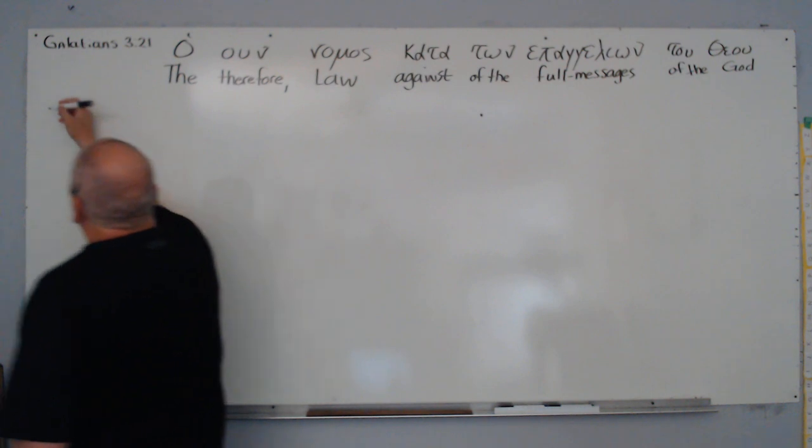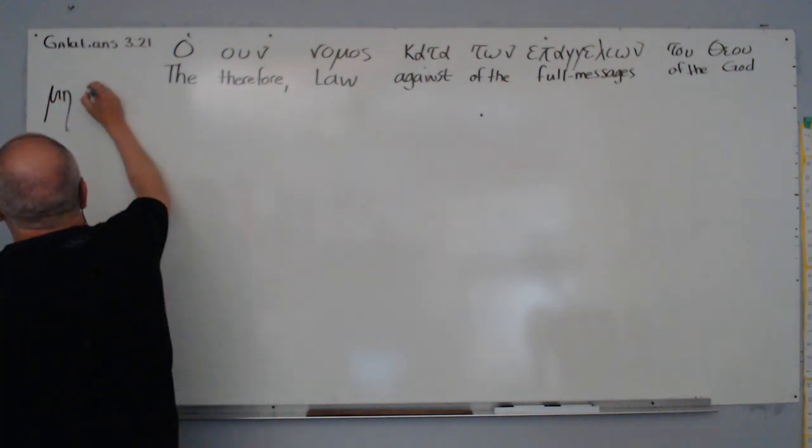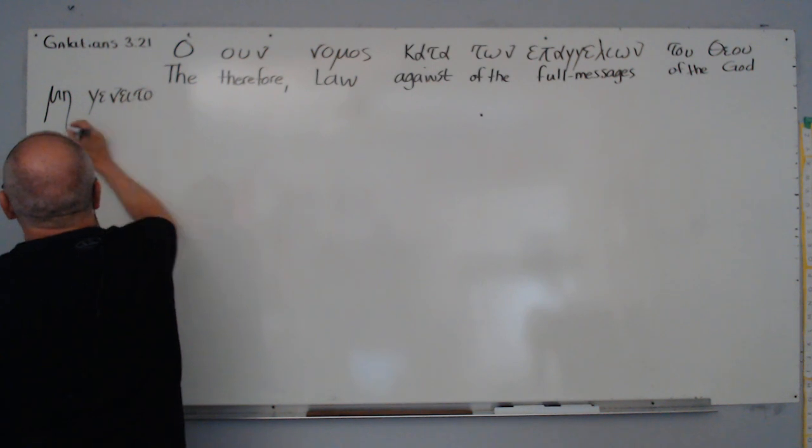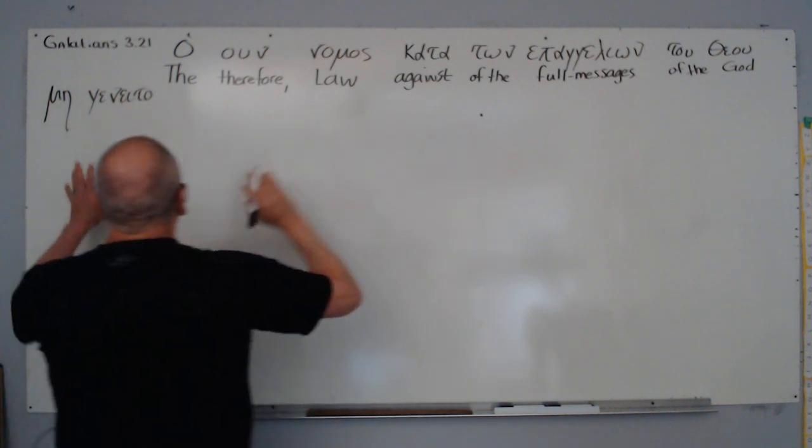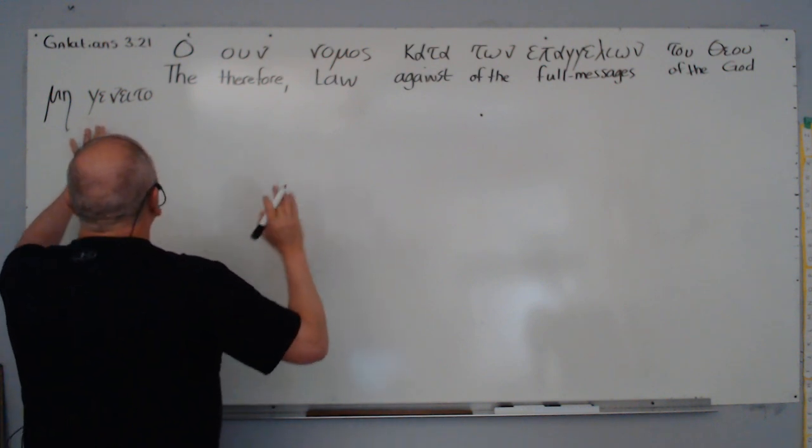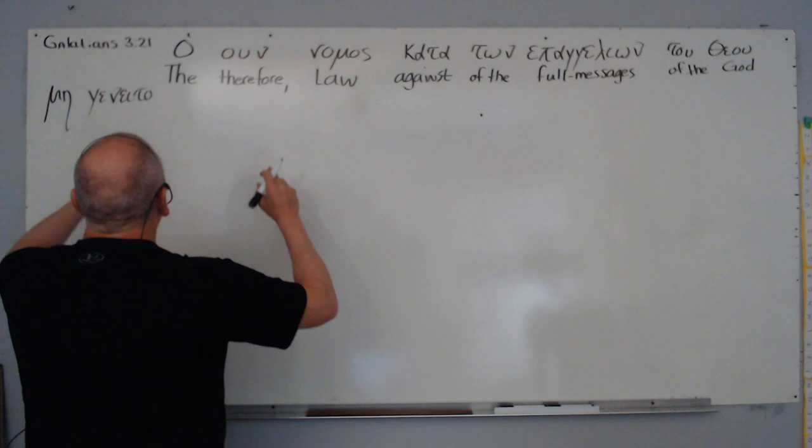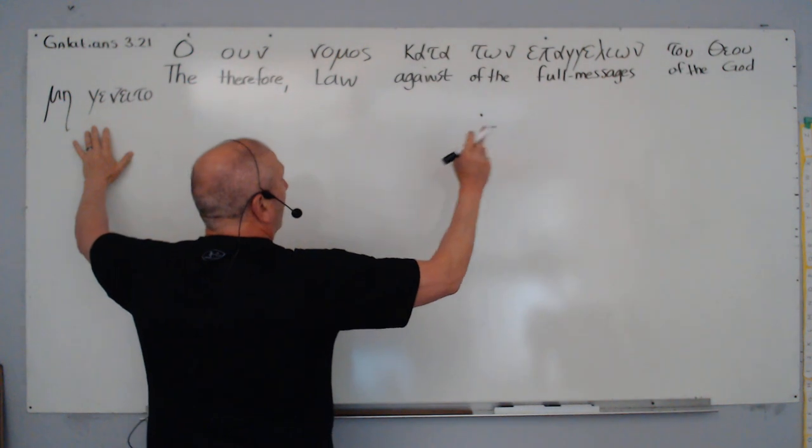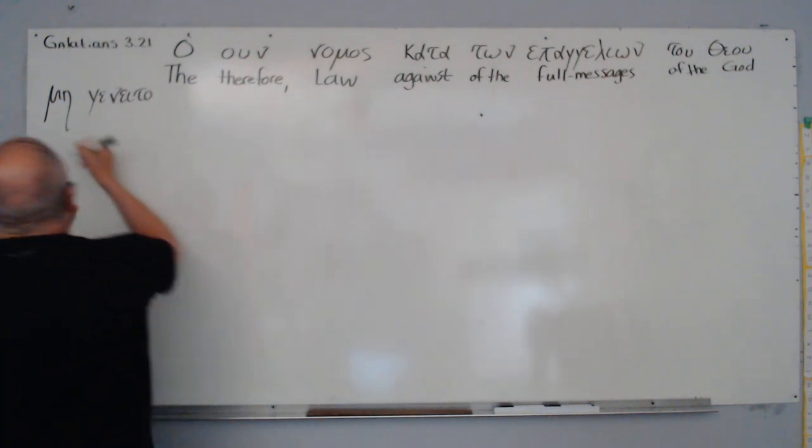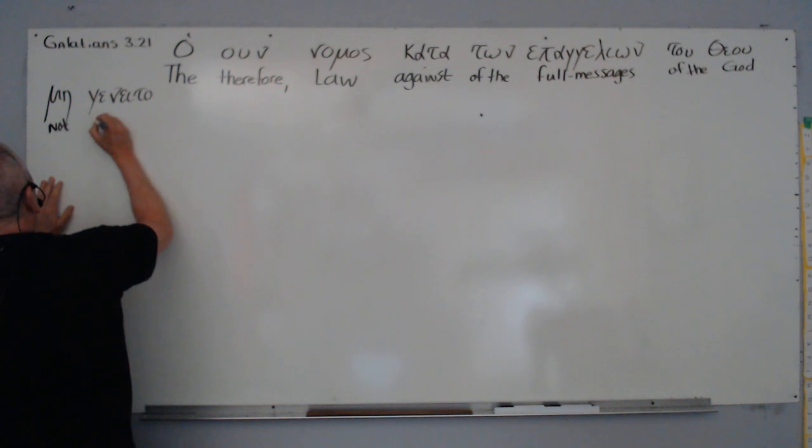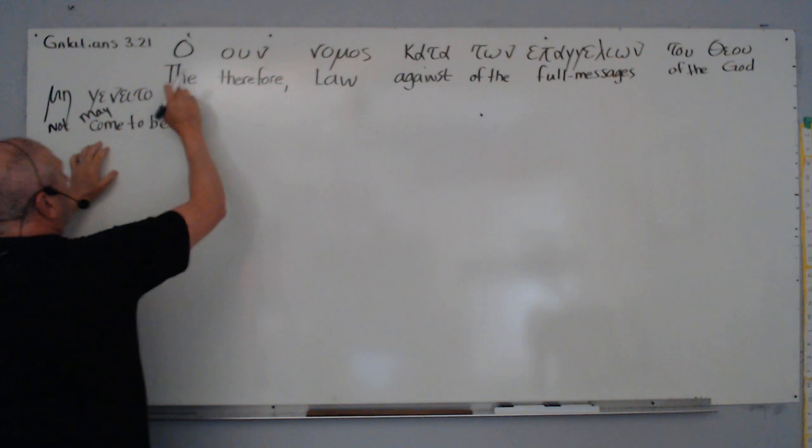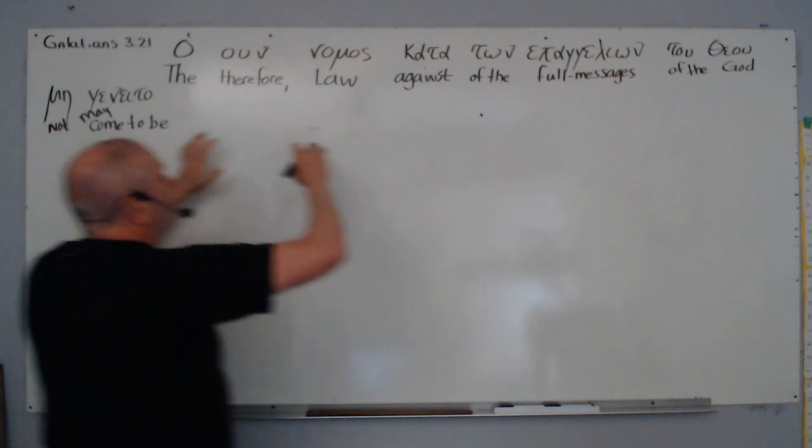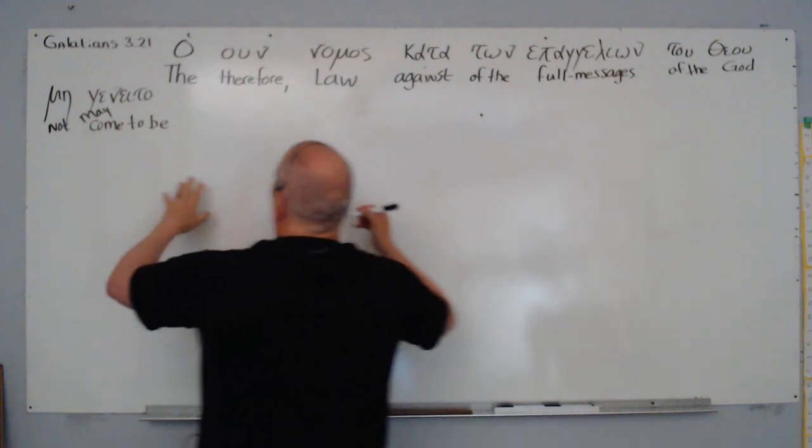And then we have this very strong geneto. And what he's saying is may - it's optative mood. So he's saying may the law, therefore, not come to be against the full messages of the God. So not here, not come to be. And again, it expresses a wish or desire. So may the law not come to be against the full messages or promises of the God.